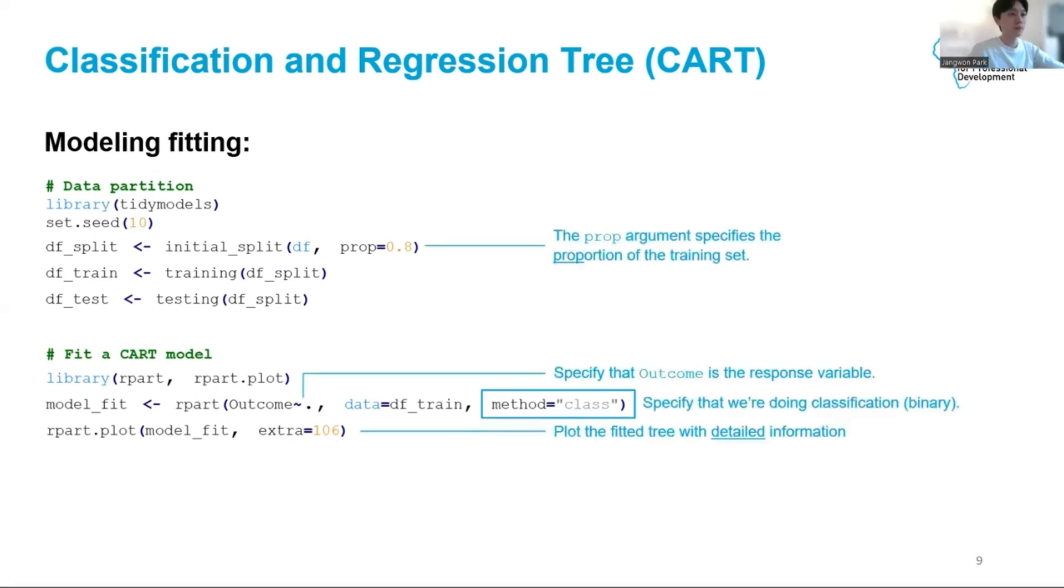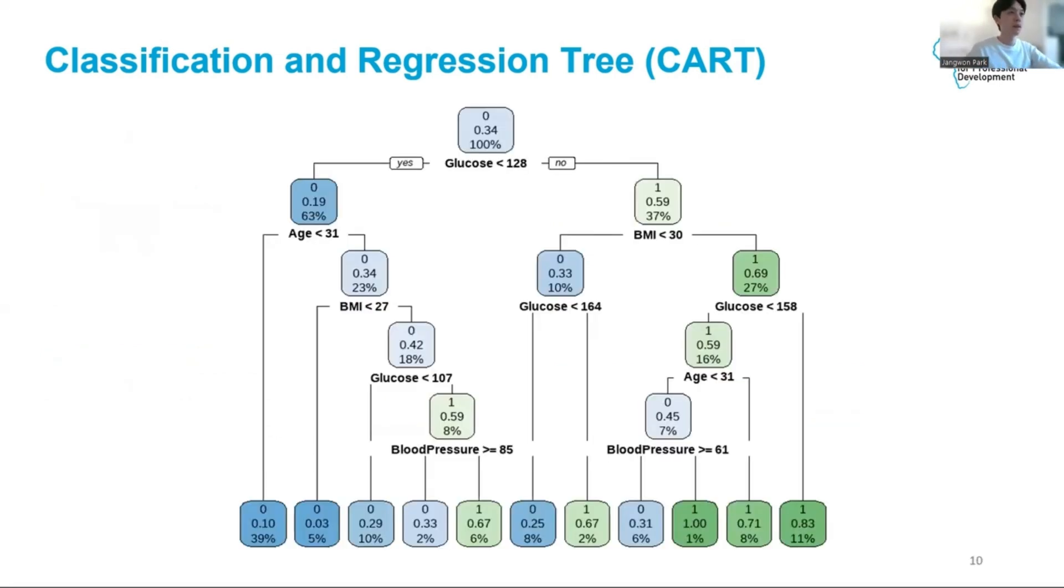Here we want to keep 80 percent of the dataset for training and the other 20 percent for testing. In R, the CART model can be trained using the rpart function. The syntax here dictates that outcome is to be used as the response variable and all the rest as features. Using the method argument in the rpart function, we specified that this is a classification task. The rpart function will recognize automatically based on the fact that there are only two unique values in outcome that we want binary classification. In the last line we use the plot function to visualize the fitted CART model.